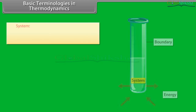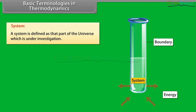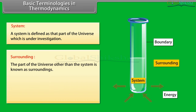Basic terminologies in thermodynamics. System: a system is defined as that part of the universe which is under investigation. For example, if we are studying the effect of temperature on the properties of water, then water will be taken as the system.